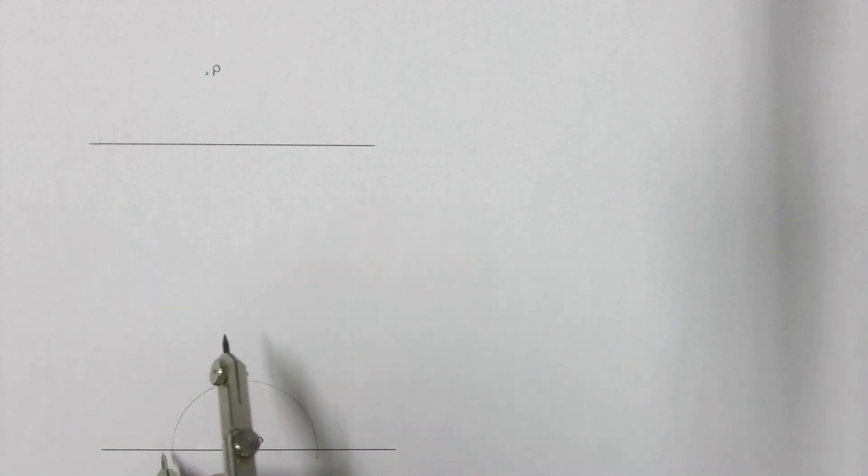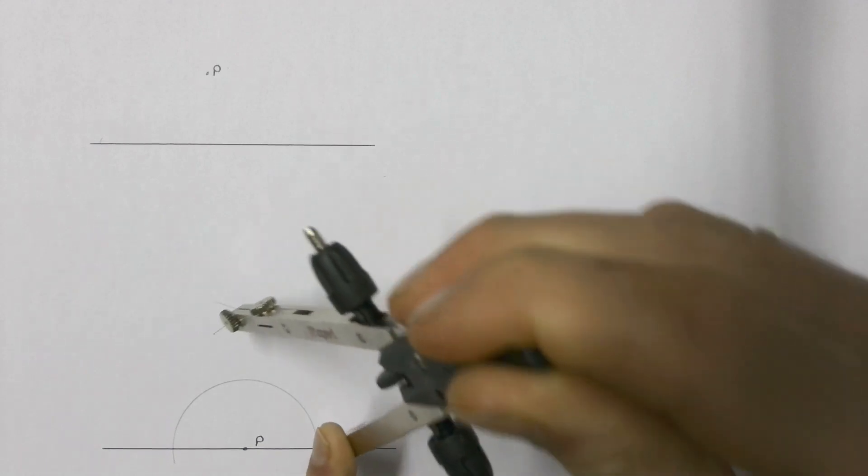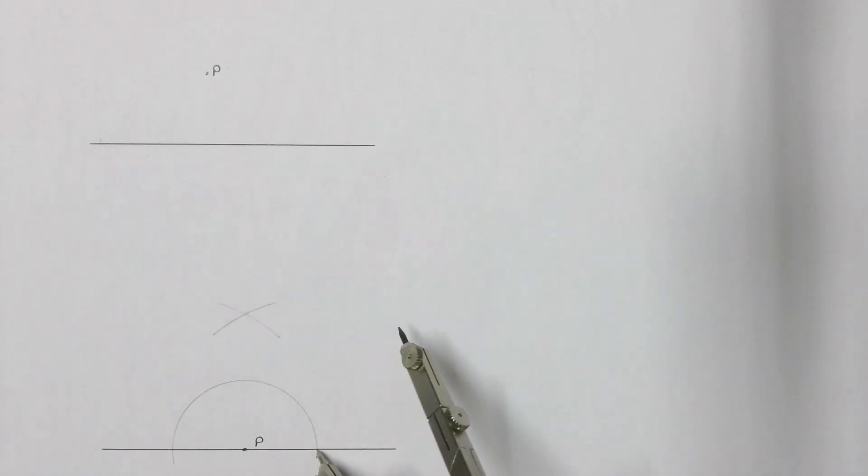Place your compass point on one point where the arc that you drew touched your line and draw an arc at the top above the point. Then repeat that on the other side, making sure that the second part of your arc intersects with the first part.